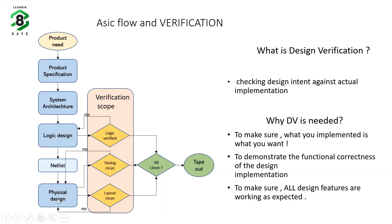After netlist verification, it goes to the physical design team. The physical design team does floor planning and related tasks, and they fix any timing issues such as setup or hold violations. They then give us a netlist again, and if there is any issue we fix it and report it back.